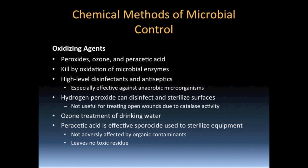Peroxides include chemicals such as hydrogen peroxide and benzoyl peroxide. Hydrogen peroxide is an antiseptic most people are quite familiar with and is often used to cleanse open wounds. However, this is ineffective because catalase is released from wounded human cells and acts to neutralize the hydrogen peroxide by converting it into water and oxygen gas. Hydrogen peroxide is used as a disinfectant and can also act as a sterilant. When hydrogen peroxide is used in higher concentrations, even aerobic and facultative anaerobes are killed because their protective enzymes are overwhelmed. Hydrogen peroxide may be used to sterilize delicate instruments such as endoscopes and dental handpieces and is increasingly being used in the food industry.